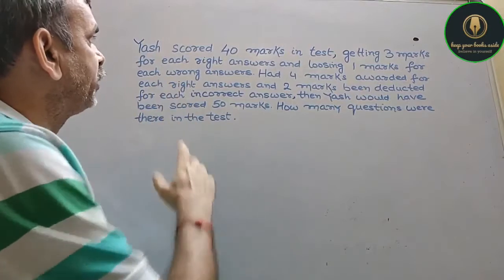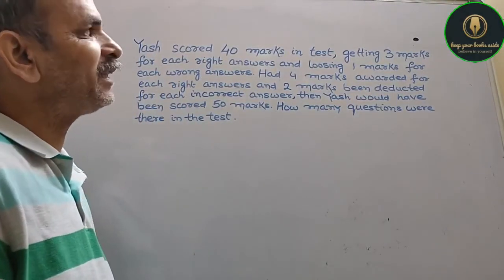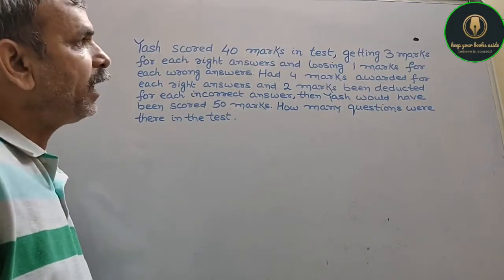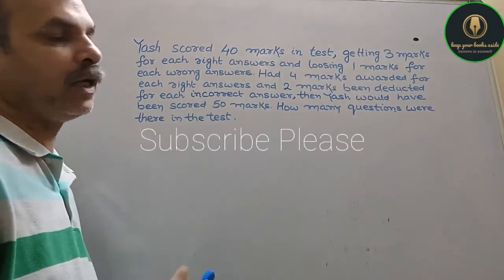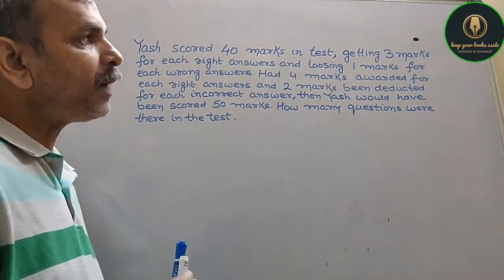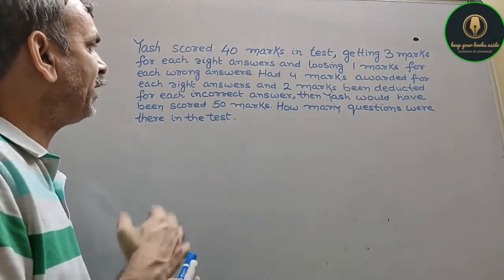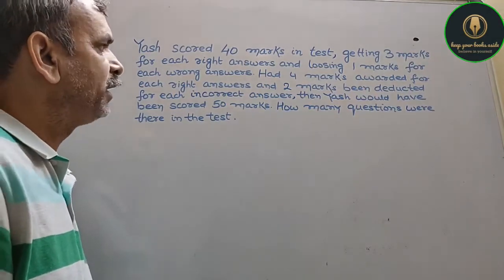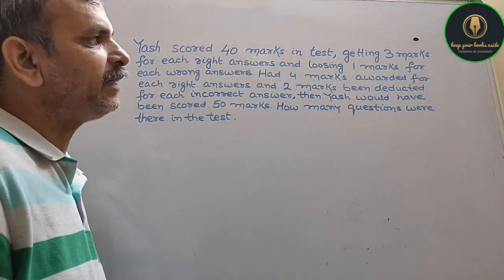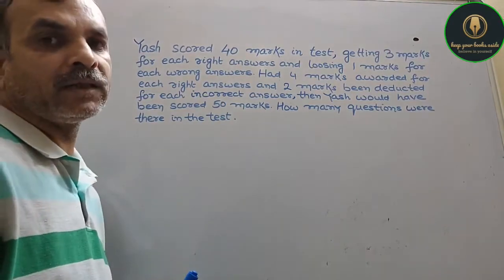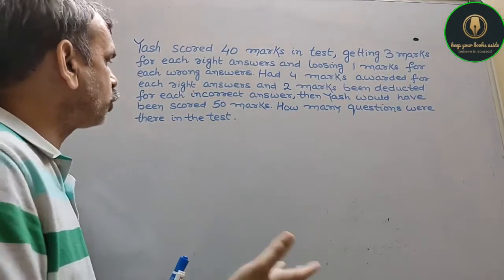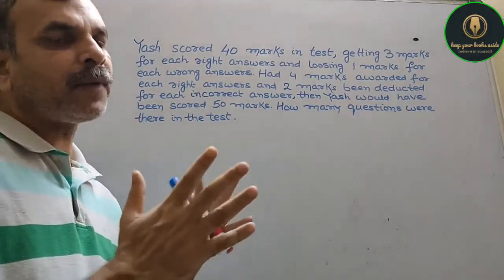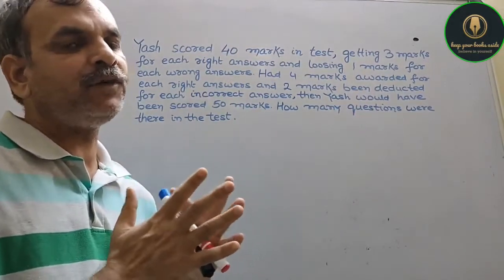Here's a question: Yesh scored 40 marks in test, getting 3 marks for each right answer and losing 1 mark for each wrong answer. Had 4 marks been awarded for each right answer and 2 marks been deducted for each incorrect answer, then Yesh would have scored 50 marks. How many questions were there in the test? That means, we have to find out the total questions.